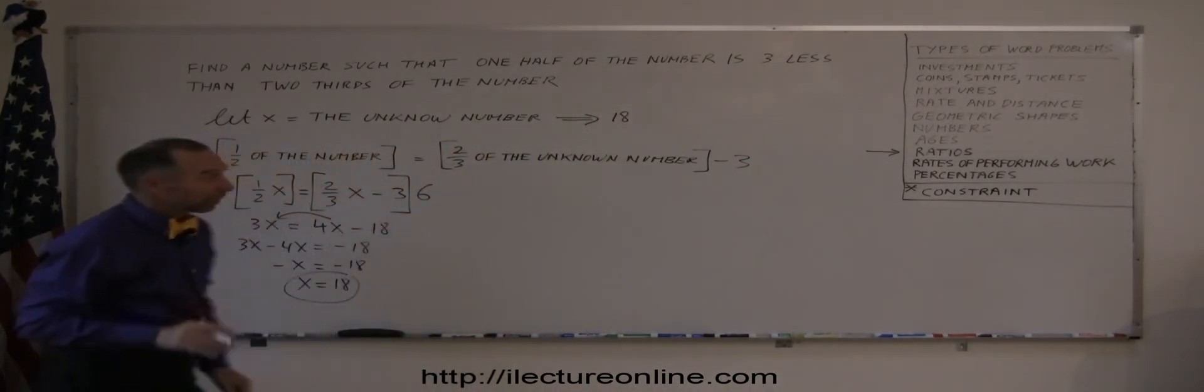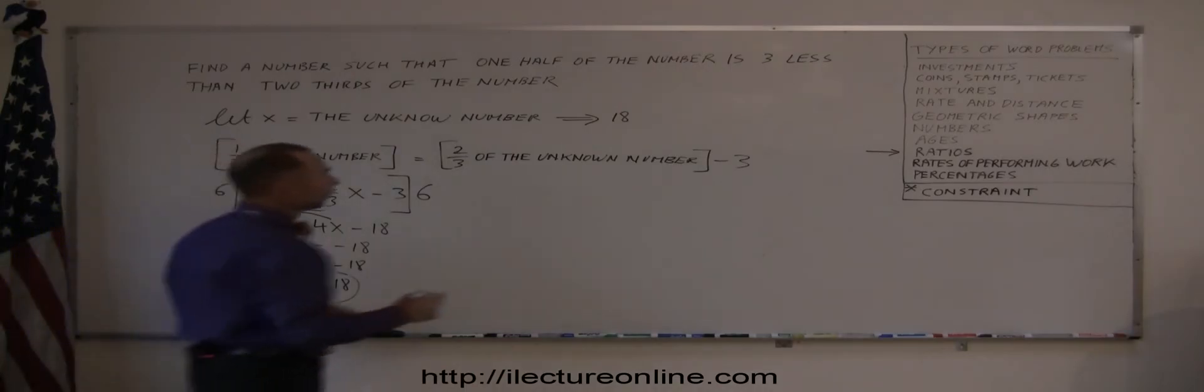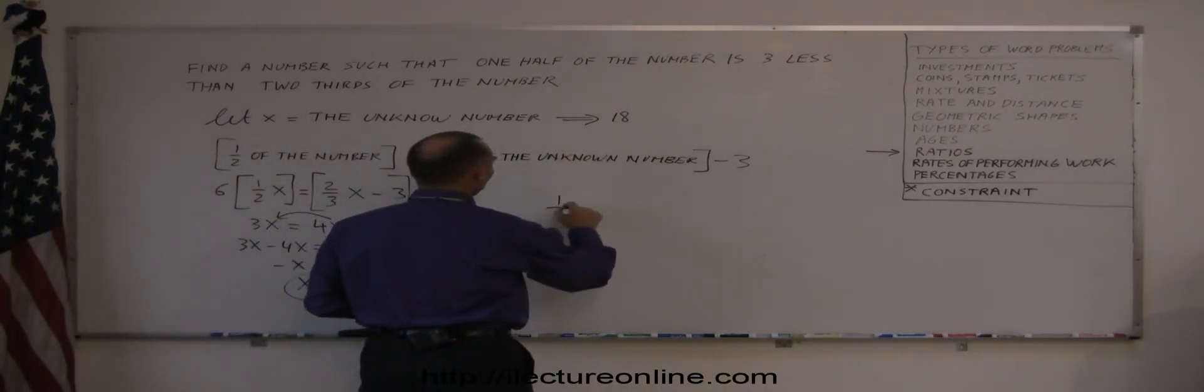And just to make sure we did this problem correctly, let's figure out if it matches the constraints here. All right, what is one-half of that number? So one-half of the number, one-half of eighteen, is equal to nine.